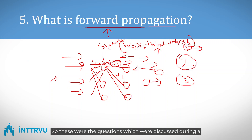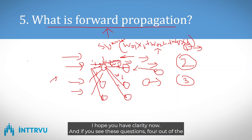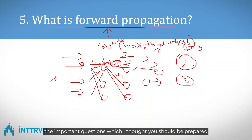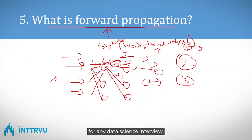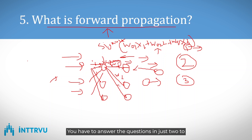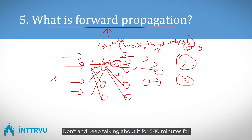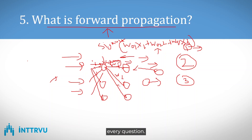These were the questions discussed during the data science interview. Four out of five questions were on neural networks. We covered the important ones you should be prepared for in any data science interview. You should answer each question in just two to three minutes — not too short like two lines, and not an essay that goes on for five to ten minutes.